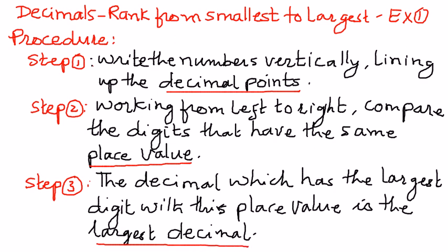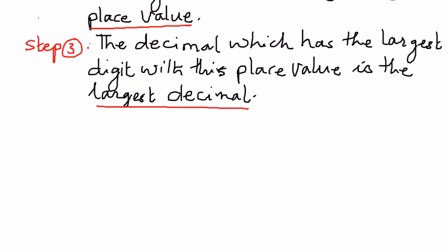We'll follow this procedure and apply it to compare decimal numbers when they are given to us. Let's take a simple example here. We want to rank from smallest to largest and the numbers are 2.17,